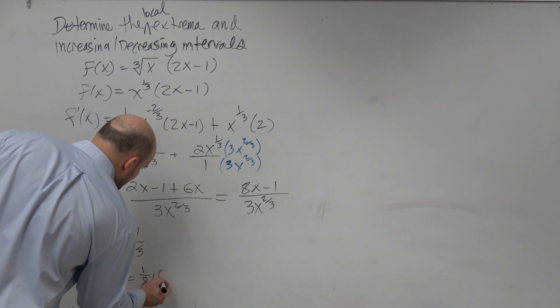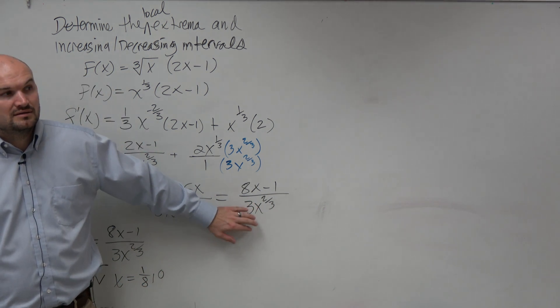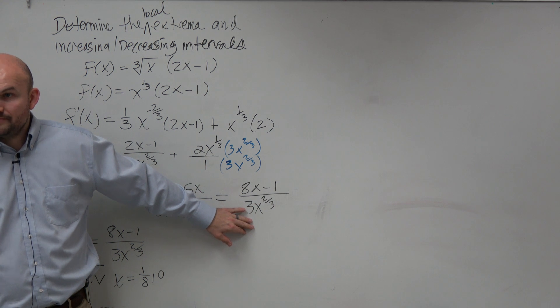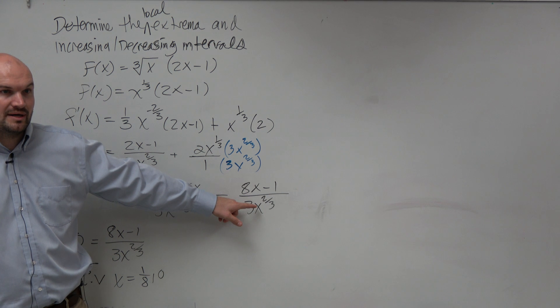Why is there a critical value at 0? Because that's when the first derivative does not exist. Right? You can't have 0 in the denominator. So if you put 0 in there, it's going to make 0 in the denominator.